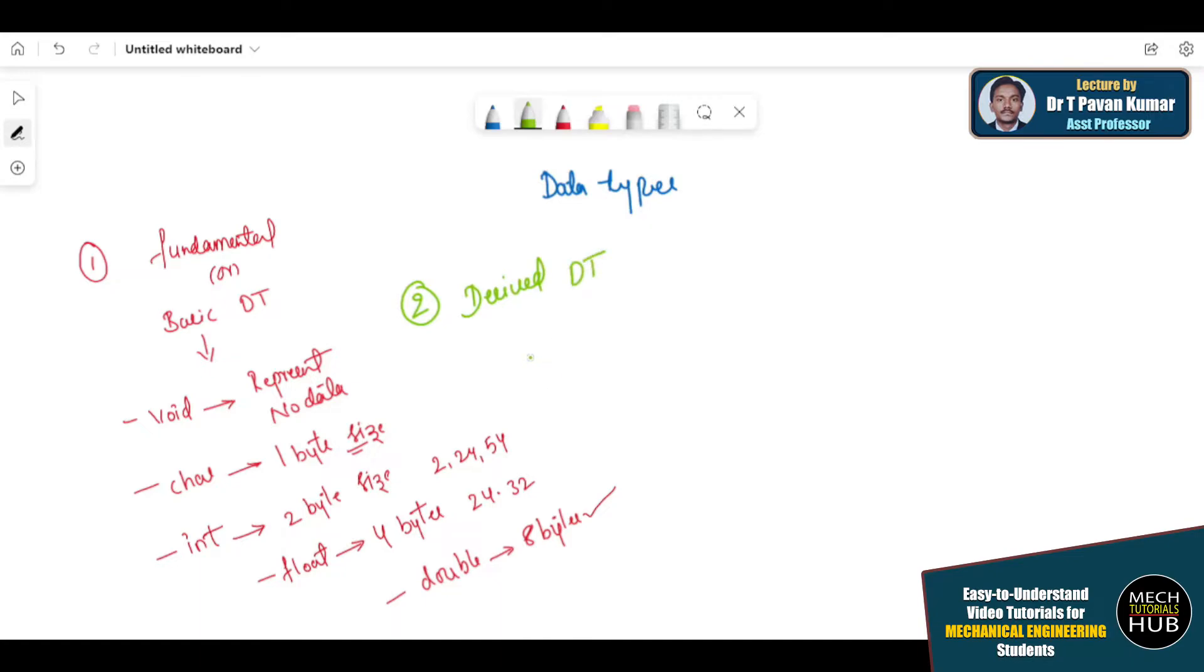Now these are like pointer and array. If you follow all the series of video lectures in this particular playlist, you could see what exactly pointer is all about and what is an array. Each and every lecture individually I'm going to present. Then a function, this is all about derived data type. Function is nothing but carrying a value from an existing value.